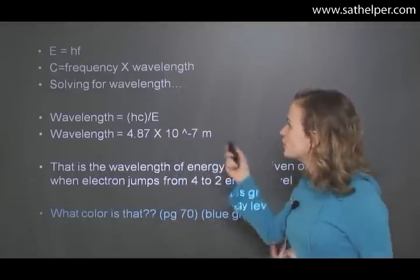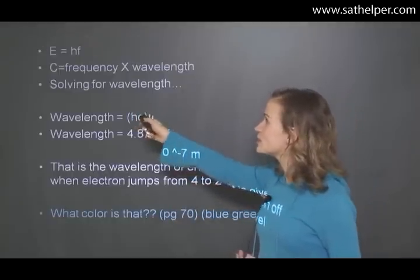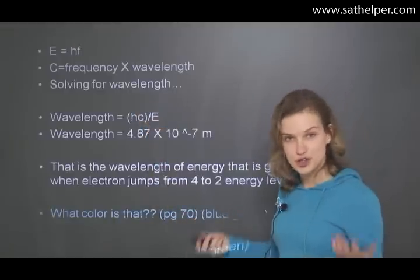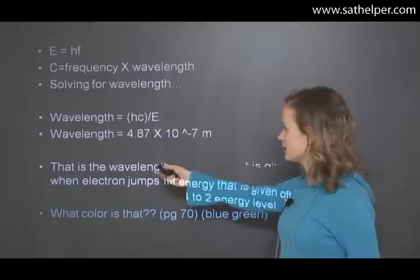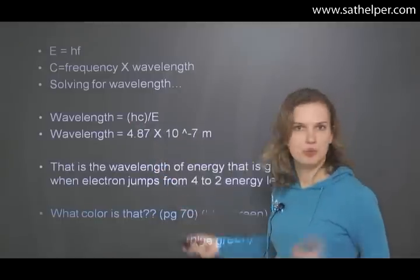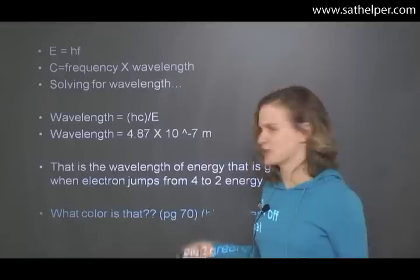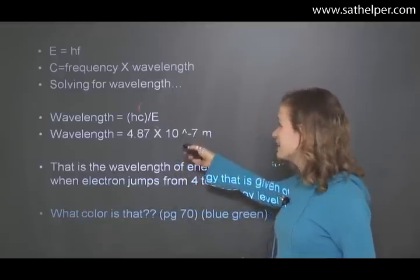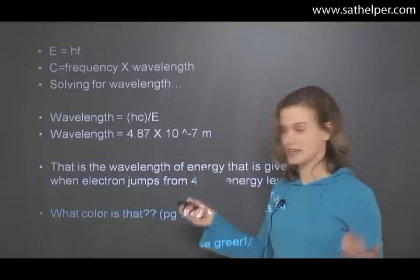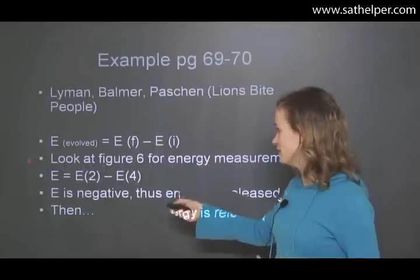And so we will always be able to figure out what the wavelength is if we know the frequency and vice versa. So let's solve it for the wavelength. We'll use this equation and we will want to exchange frequency for wavelength. So rearranging the two equations and combining them, we have wavelength is equal to HC. Both of those are constants. So that's very easy. Divided by the energy.